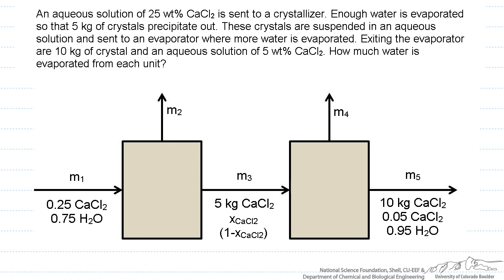The second thing is, and here is an example of trying to minimize the number of variables you have. Since we know that mass fractions equal one, we can write the mass fraction here of water as one minus the mass fraction of calcium chloride.